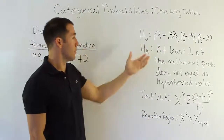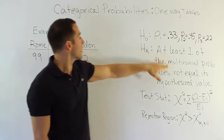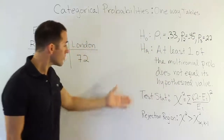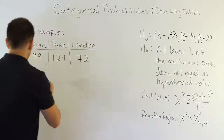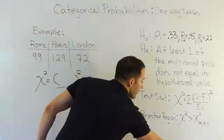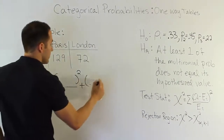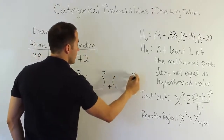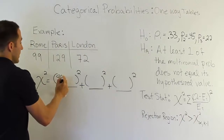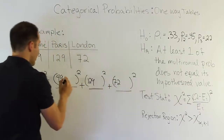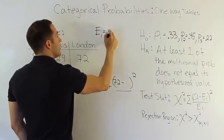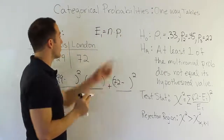The alternative hypothesis H_A remains the same: at least one of the multinomial probabilities does not equal its hypothesized value. The test statistic formula is still the same with three fractions. However, those fractions will have different expected values. The observed values — 99, 129, and 72 — haven't changed, but the expected values are now calculated using the new proportions specified in H0.